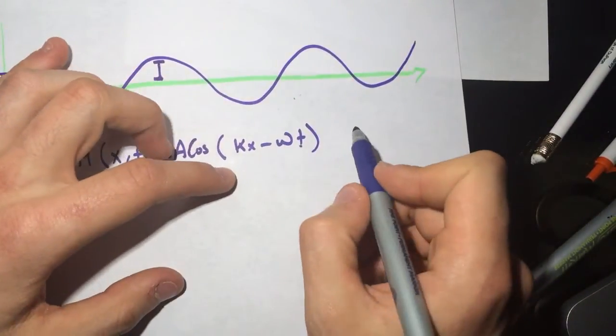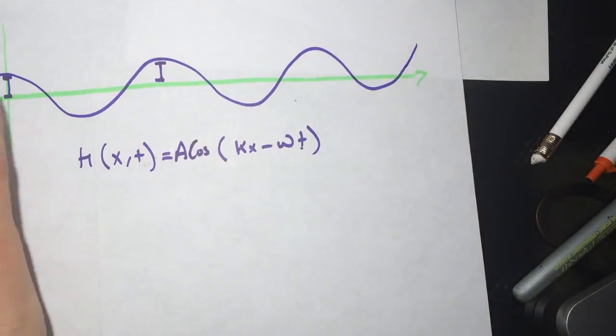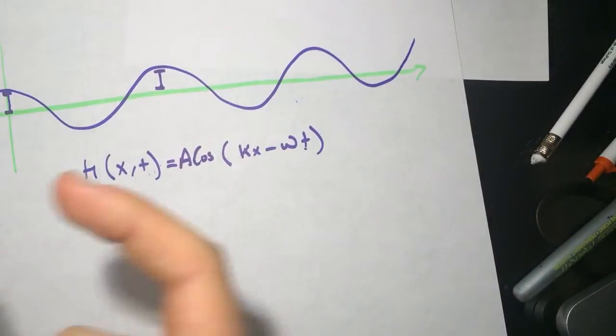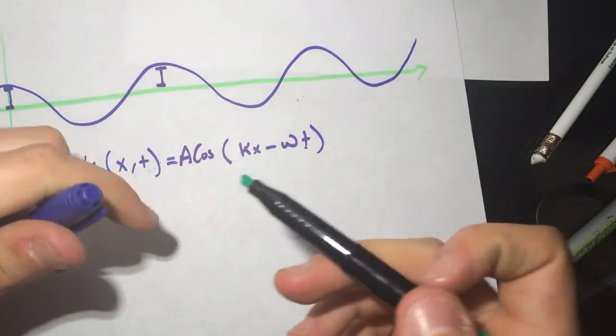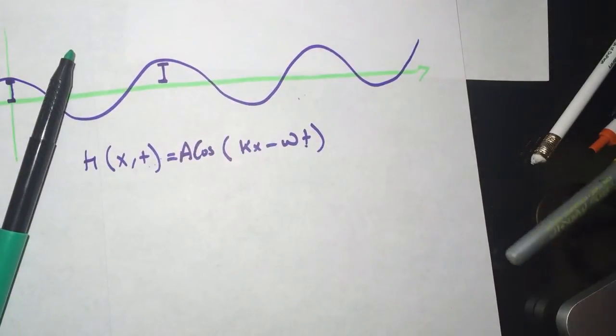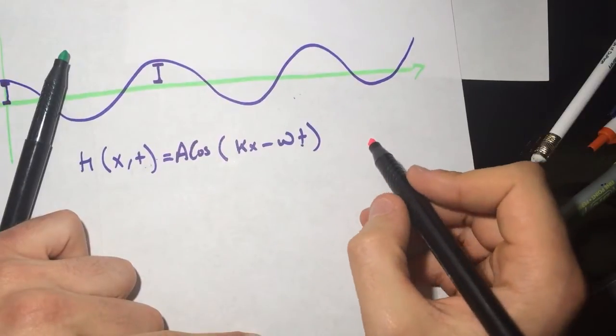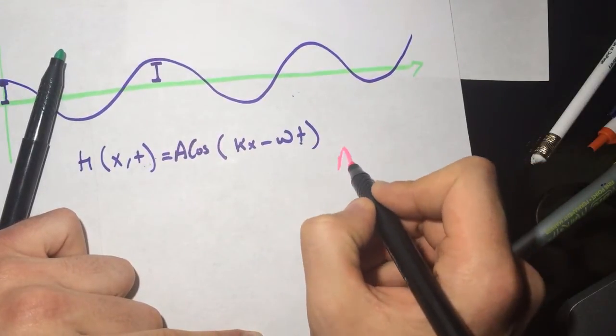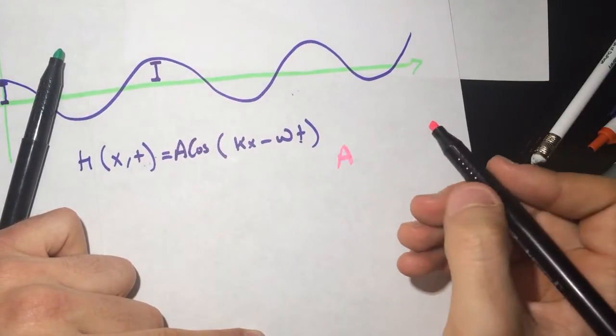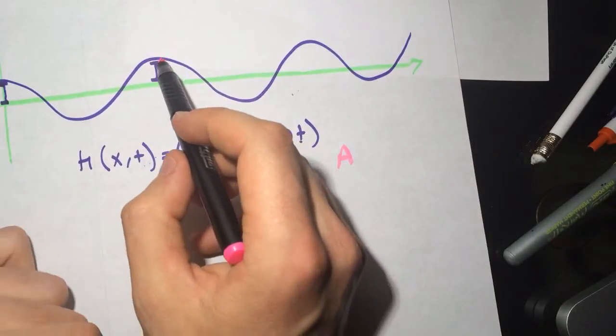Alright, so let's see what are these things inside. So let's pick this green. Right now, let's do the pink. Since you're a girl. So A is the amplitude. This is the highest point, so this is the A.